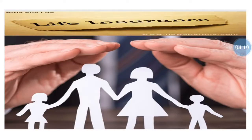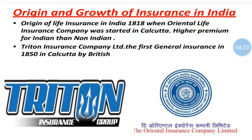This type of logo we have seen in advertisements — this is a life insurance logo. Next is the origin and growth of insurance companies in India. The first insurance company came in 1880. Its name was Oriental Life Insurance Company, which was started in Calcutta by the British government. It was specially started for the British people. The main characteristic of this insurance was that it charged a higher premium from Indian citizens and a lower premium from non-Indians, meaning Britishers were charged a lower premium.